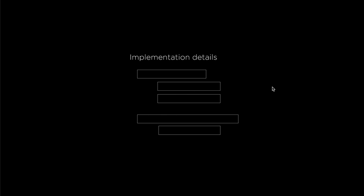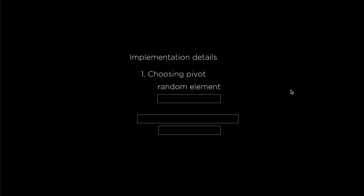Before I go, I wanted to mention a few implementation details. The first is how to choose the pivot. In our implementation we chose the last element, but another method is to pick a random element as the pivot — or equivalently, you can randomly reshuffle the given array before running quicksort and then pick the last element. Another method is called 'median of 3': you choose three elements randomly from the given section and pick their median, decreasing the probability of picking a bad pivot.